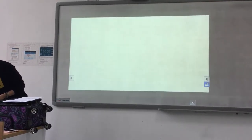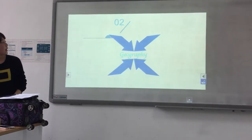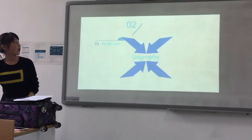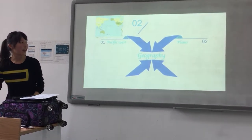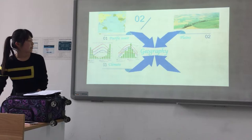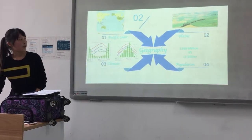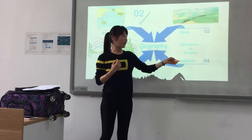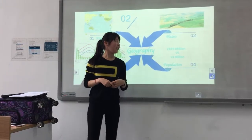First, let's focus on the geography part. For the similarities, both China and Australia are located on the Pacific coast, and most of the people living in both countries live in the plains. For the differences, they have different climates and population. For the population, there is a sharp difference because China has a large population of 1.3 billion, while Australia only has 25 million.